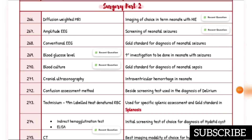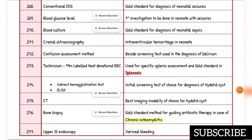Imaging of choice in term neonate with HIE is diffusion-weighted MRI. Screening of neonatal seizures is amplitude-integrated EEG. Gold standard for diagnosis of neonatal seizures is conventional EEG. First investigation to be done in neonate with seizures is blood glucose level. Gold standard for diagnosis of neonatal sepsis is blood culture. Intraventricular hemorrhage in neonate: cranial ultrasonography.